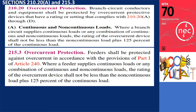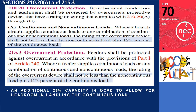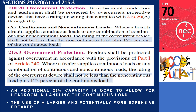Let's now explore the regulations regarding overcurrent protection. By following Sections 210.20A and 215.3, you can ensure that the overcurrent device can handle at least 125% of the continuous load plus the non-continuous load when branch circuits and feeders supply continuous loads or a mix of continuous and non-continuous loads. Essentially, the breaker or overcurrent device requires an additional 25% capacity for headroom in handling continuous loads, which necessitates the use of a larger and potentially more expensive breaker.